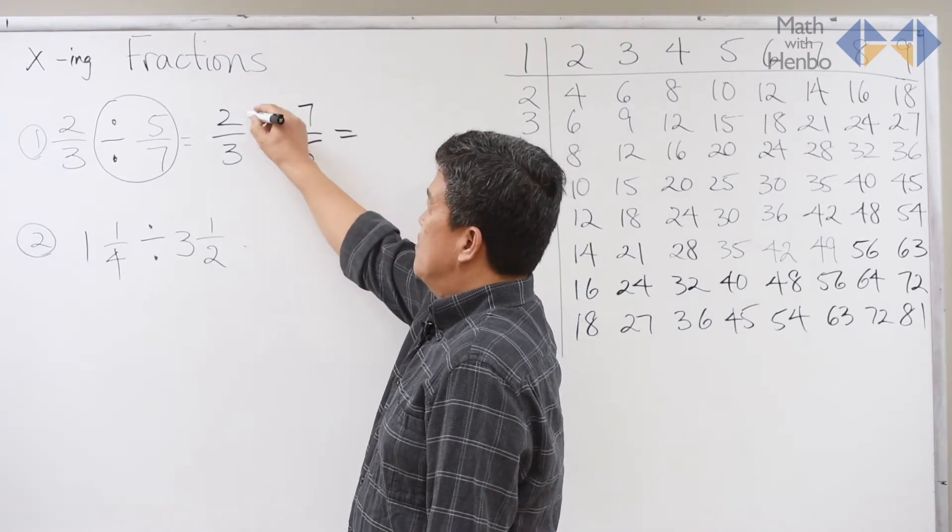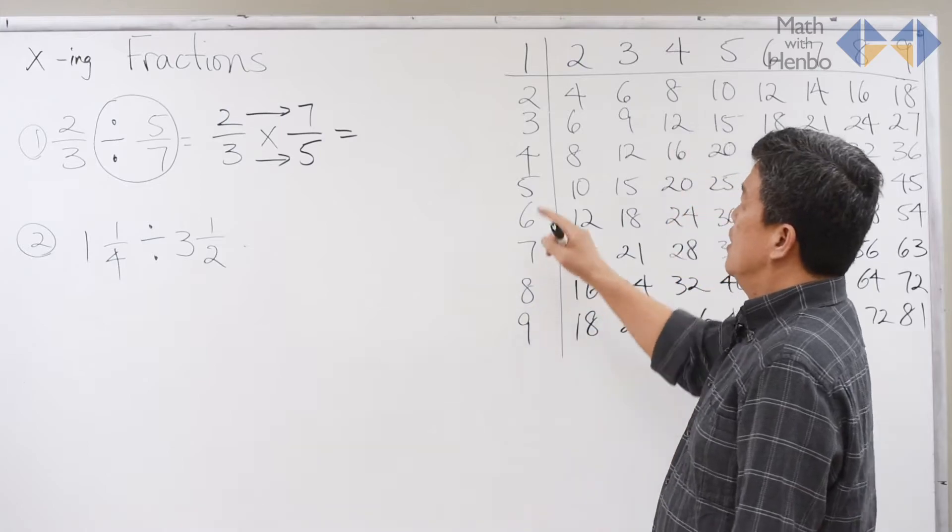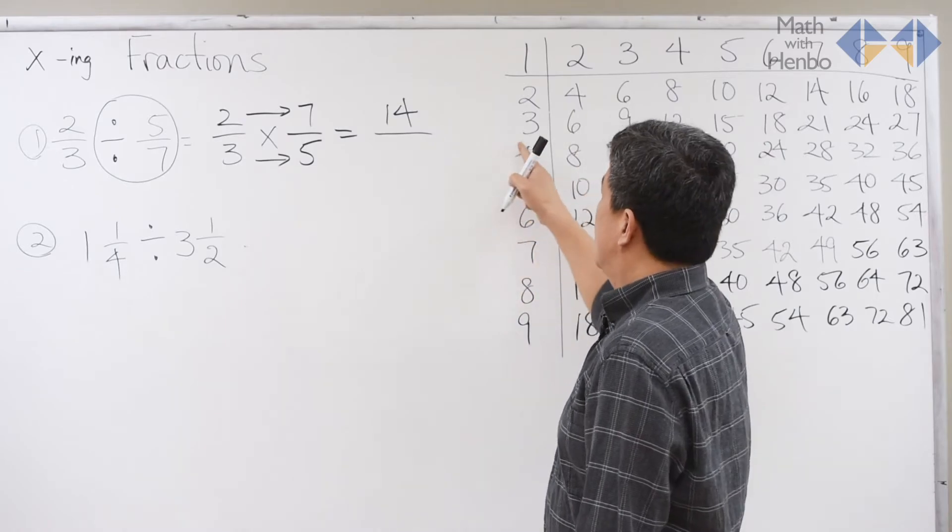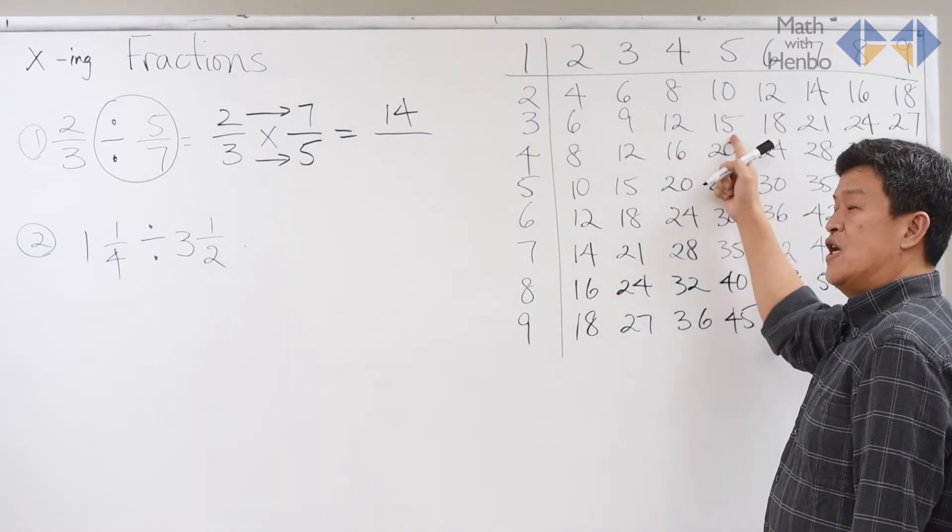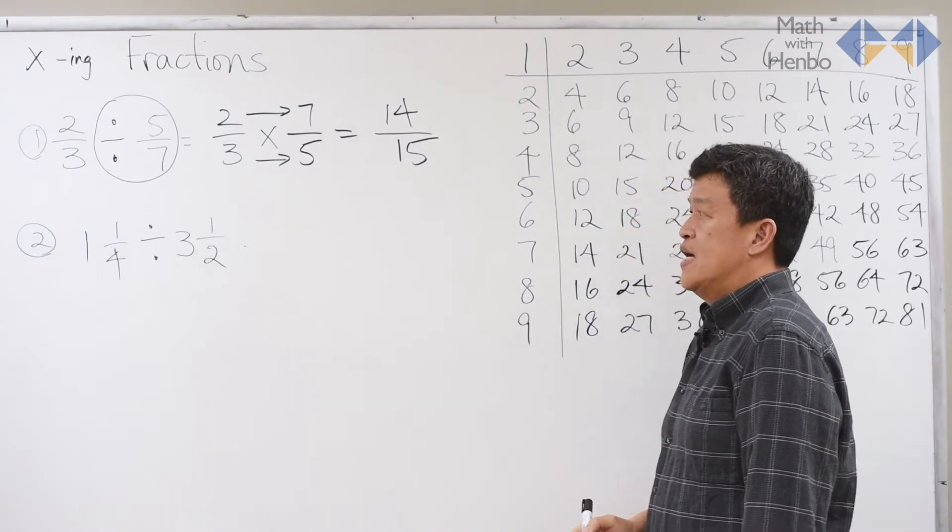This, then, becomes 2 times 7 times 3 times 5 for the bottom. And 2 times 7 gives us 14. And 3 times 5 gives us 15. 14 over 15 is the answer.